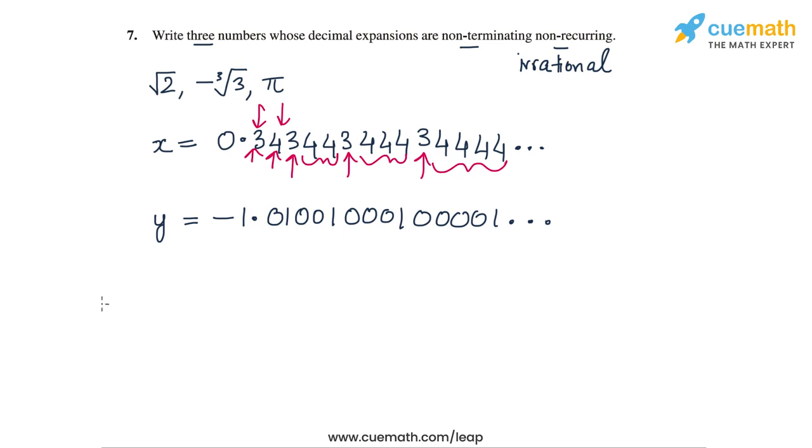Again, there is no recurring pattern in the sequence of digits after the decimal point. So y is a non-terminating, non-recurring decimal.